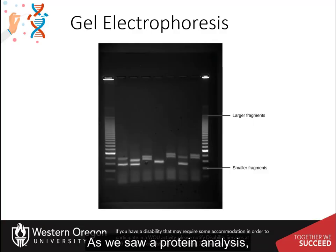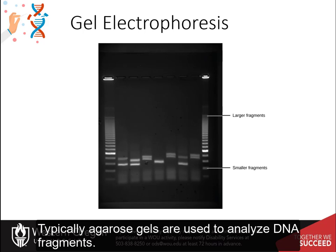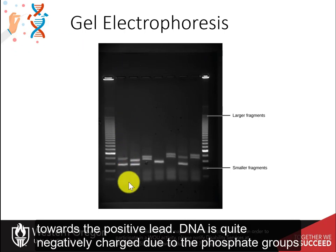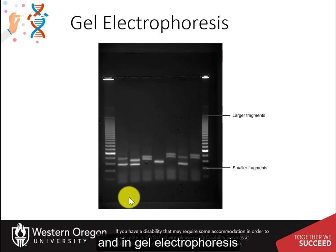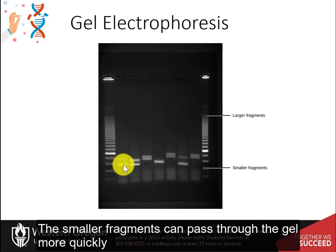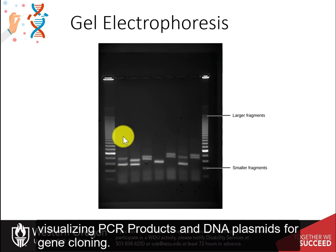As we saw with protein analysis, gel electrophoresis is an important way of visualizing, isolating, and purifying DNA. Typically, agarose gels are used to analyze DNA fragments. As with protein gels, the DNA is run through an electric current towards the positive lead. DNA is quite negatively charged due to the phosphate groups, and in gel electrophoresis it is separated based on its size. Smaller fragments pass through the gel more quickly and move farther from the wells than larger fragments. This is especially useful for visualizing PCR products and DNA plasmids for gene cloning.